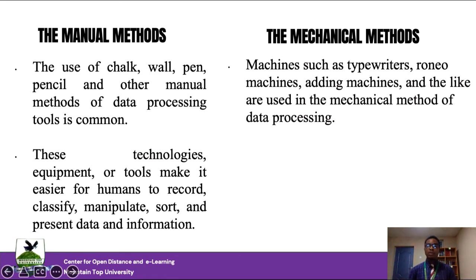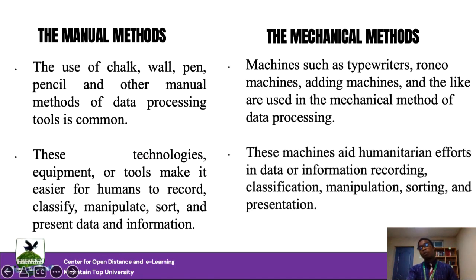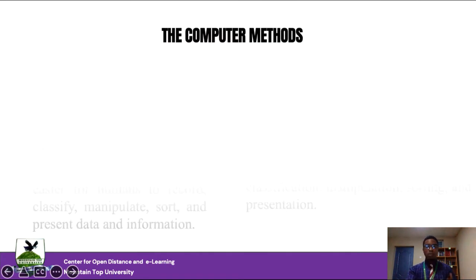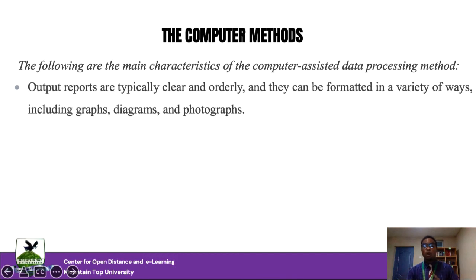Later, as humans began to manipulate materials, mechanical tools emerged for processing information — such as typewriters, adding machines, and calculators as automated mechanical ways. Although in some cases humans still had to operate these machines, because they were machines they could not get tired, so they could do the job much faster. These machines aided humanitarian efforts, especially in data recording, information recording, classification, manipulation, sorting, and presentation.